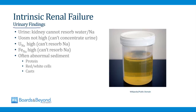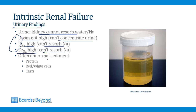The urinary findings in intrinsic renal failure are very helpful for distinguishing it from pre-renal failure. The kidneys cannot reabsorb water and sodium normally, so the urinary osmolarity will not be high — the kidneys can't concentrate the urine. The urinary sodium is going to be high because the kidneys can't reabsorb it from the urine. By the same logic, the FENa is high. These three things are all the opposite of what you find in pre-renal failure. In intrinsic renal failure, there's often an abnormal sediment — protein, red and white cells, and casts can all be present.